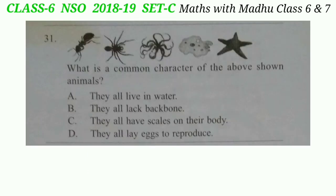Question 31: What is a common character of the above shown animals? Look at the pictures. The correct answer will be option B — they all lack backbone. In the given pictures, amoeba, protist, spider, octopus, and starfish are invertebrates, so they all lack backbones. The correct answer is option B.